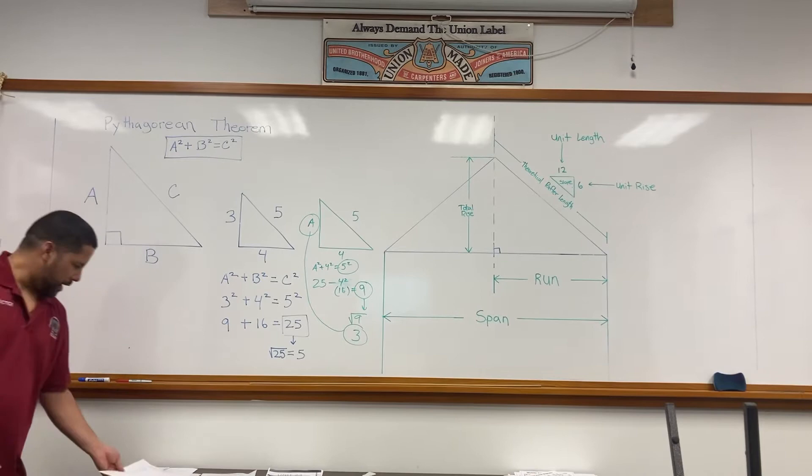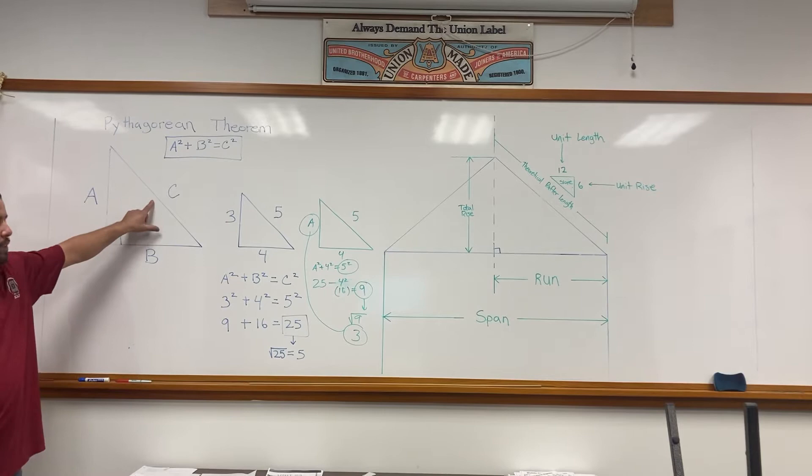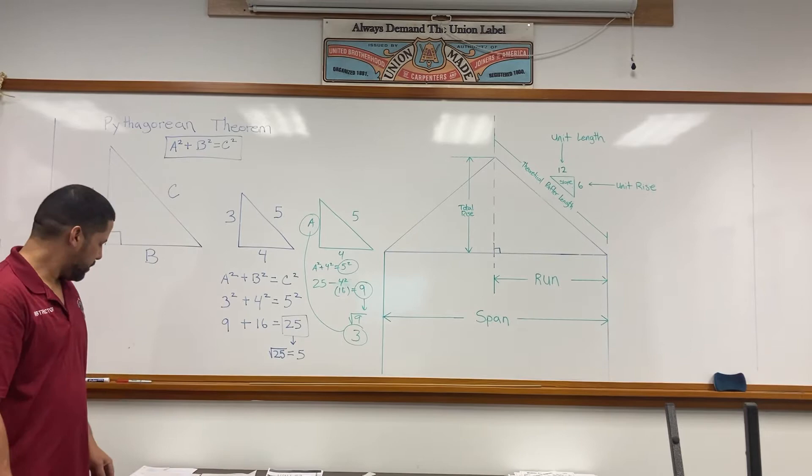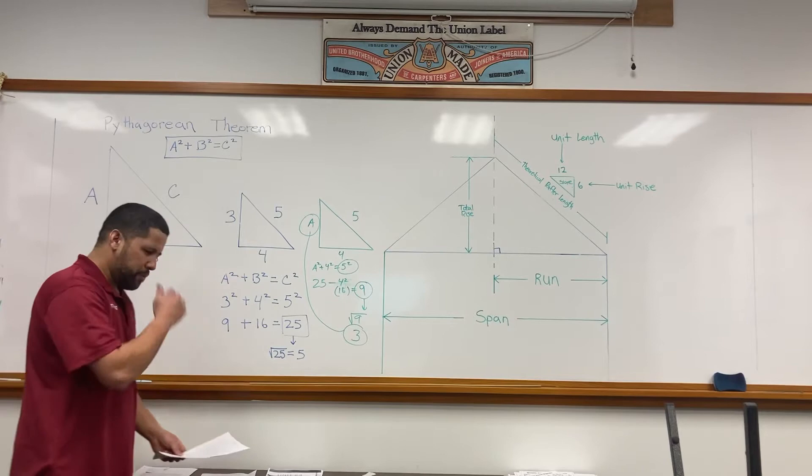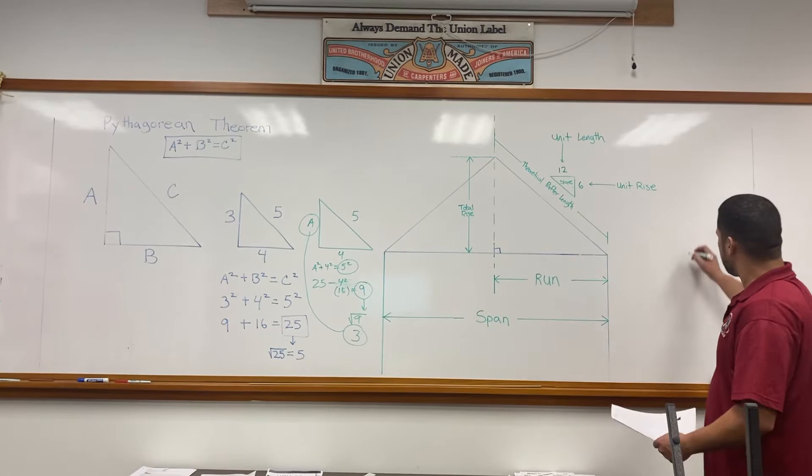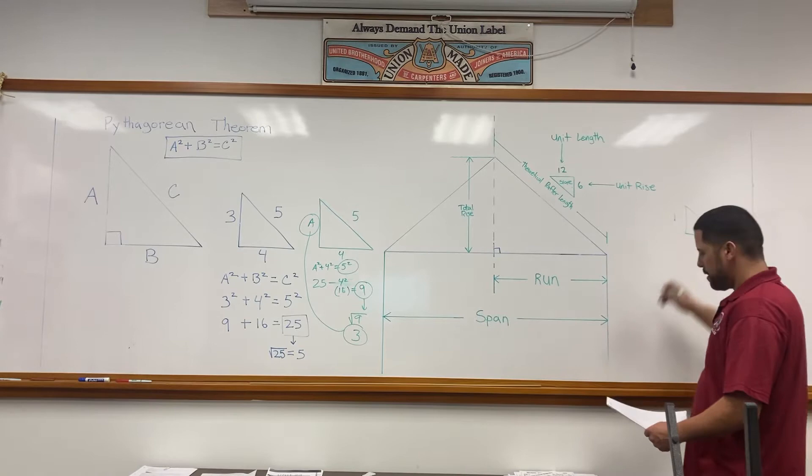Now that we understand how to get the hypotenuse of a right triangle, we can take you one step closer to understanding how to calculate the length of a rafter. In front of you should have another worksheet with more triangles. You have a series of right triangles from 1 through 12.